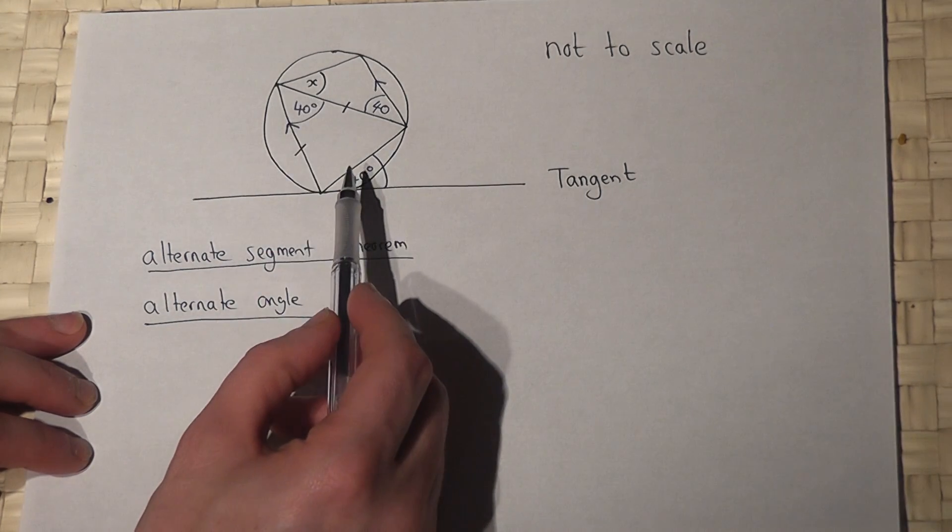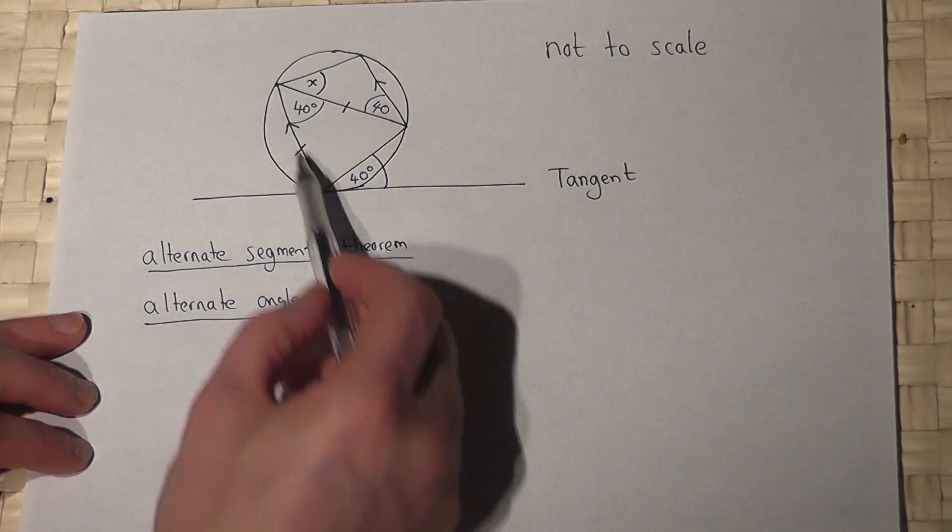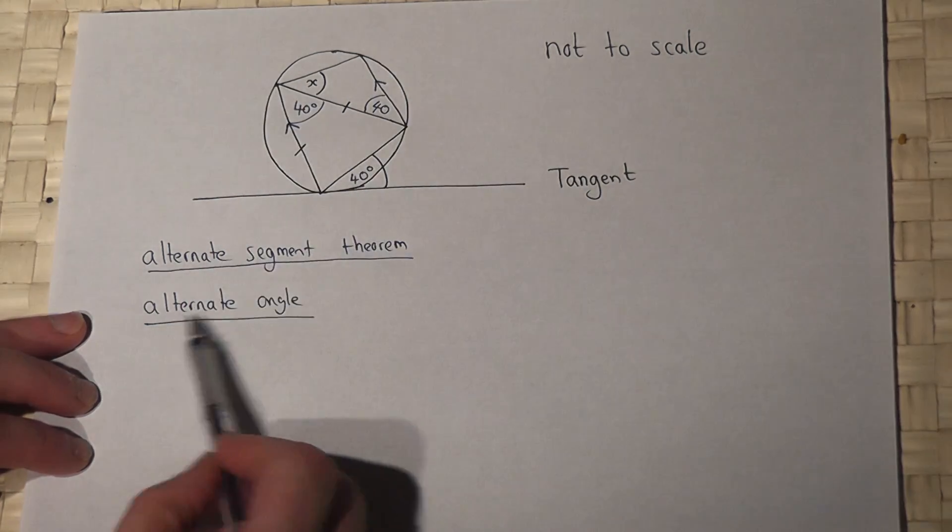So that's 40 because of the alternate segment theorem. That's 40 because it's a Z angle or an alternate angle.